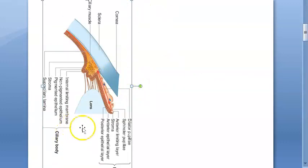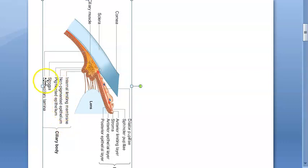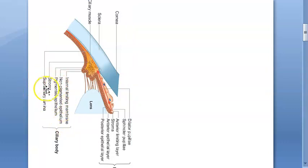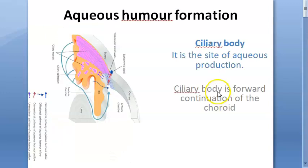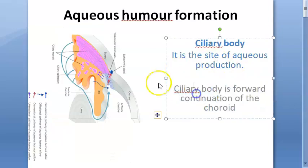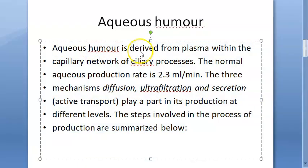The ciliary body is making the aqueous humor. Here you can see the ciliary body — it has an internal limiting membrane, non-pigmented epithelium, pigmented epithelium, stroma, and supraciliary lamina. The part of the choroid which is projecting forward becomes the ciliary body. So the ciliary body is the forward continuation of the choroid.